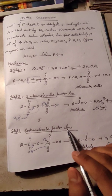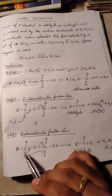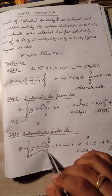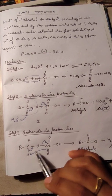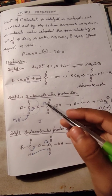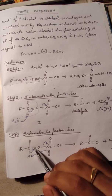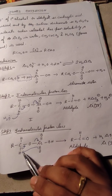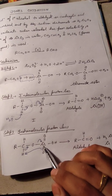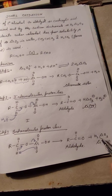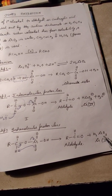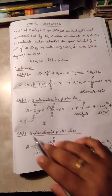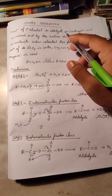Intramolecular proton loss also takes place within the same molecule. From the double bond, one hydrogen is transferred internally. The result is the same: RCHO (aldehyde) is formed, and H₂CrO₃ is produced, where the chromium atom again has oxidation number +4.